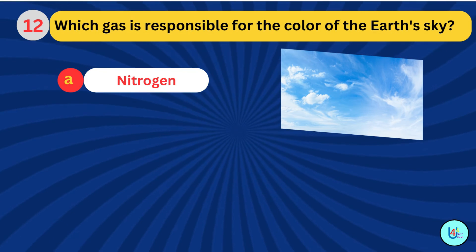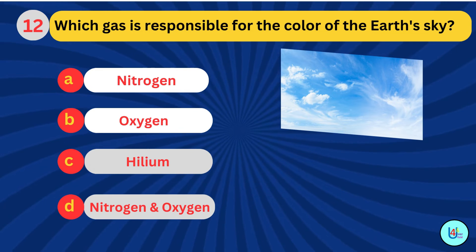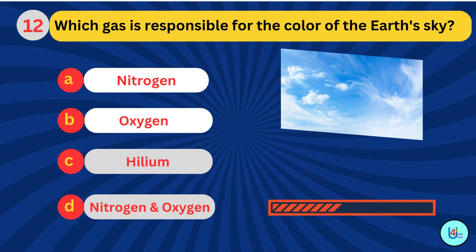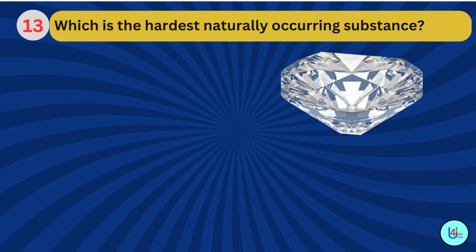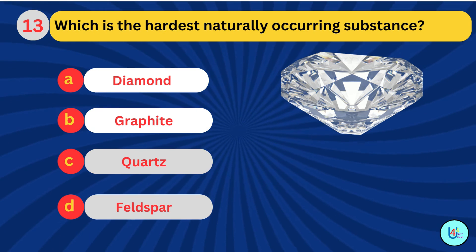Which gas is responsible for the color of the sky? Nitrogen and Oxygen. Which is the hardest naturally-occurring substance?